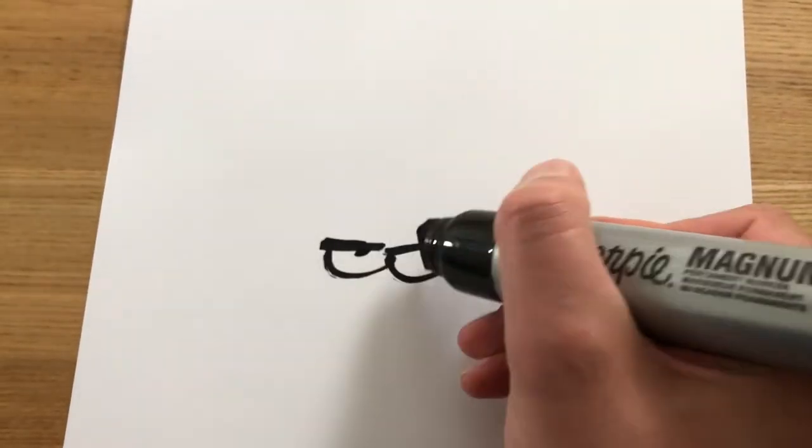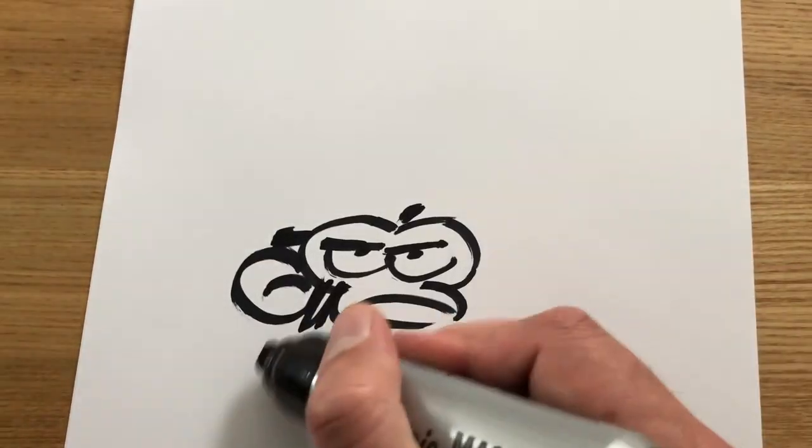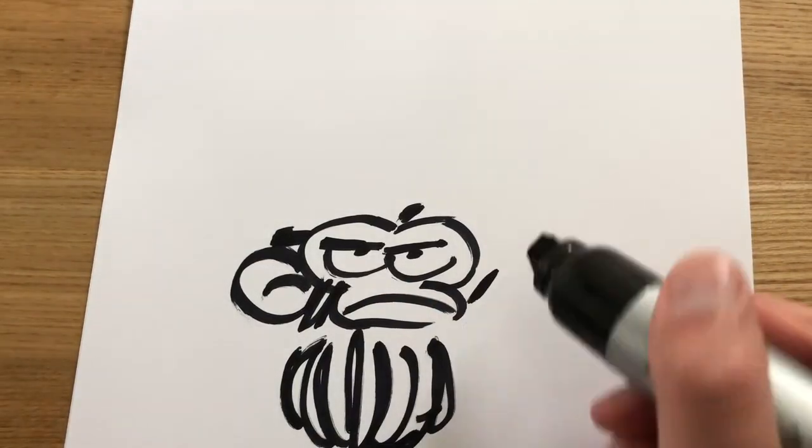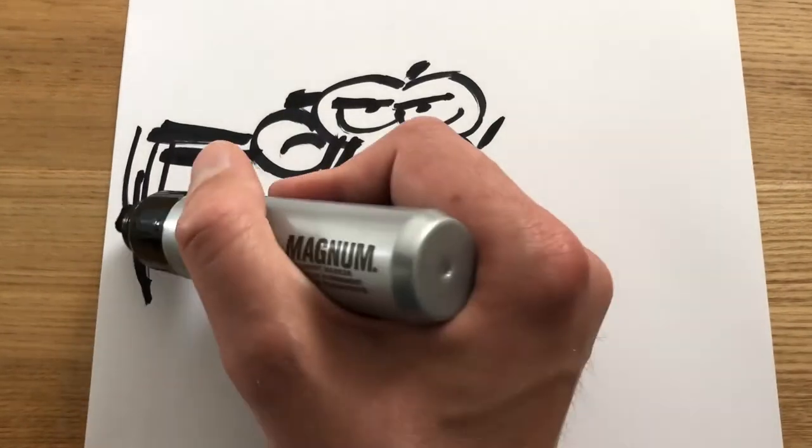But when I draw with a big pen with a very thick stroke, my drawing automatically gets bigger and looser. You can't add that much detail anymore because the line is so thick.